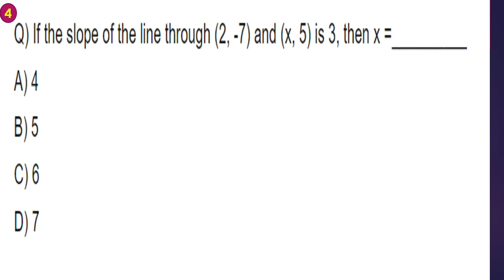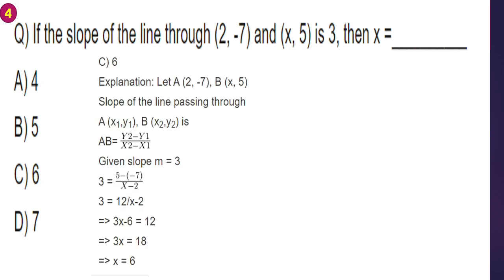Next problem: if the slope of the line through (2, minus 7) and (x, 5) is 3, then x equals? The slope formula is: slope equals (y2 minus y1) by (x2 minus x1). Here x1 equals 2, y1 equals minus 7, x2 equals x, y2 equals 5.